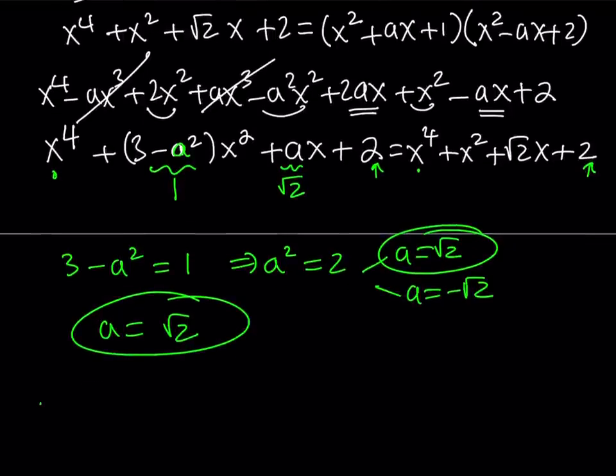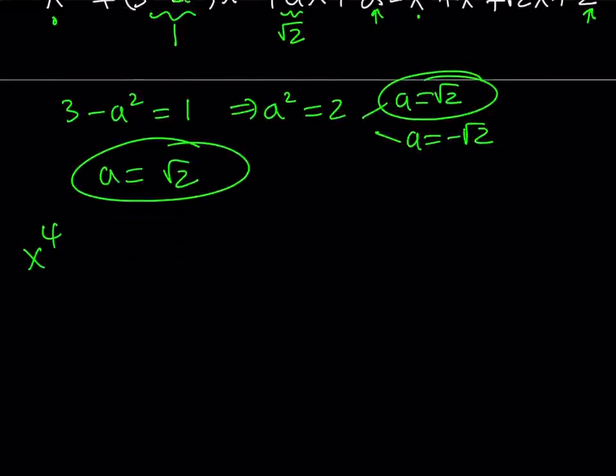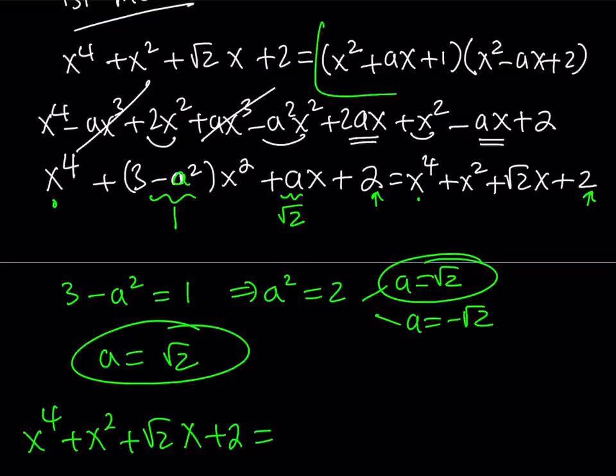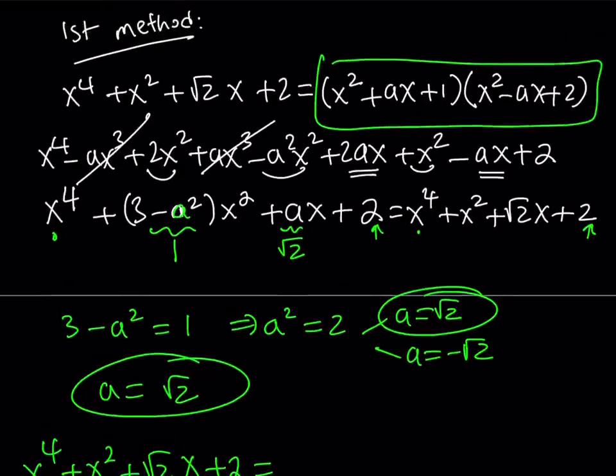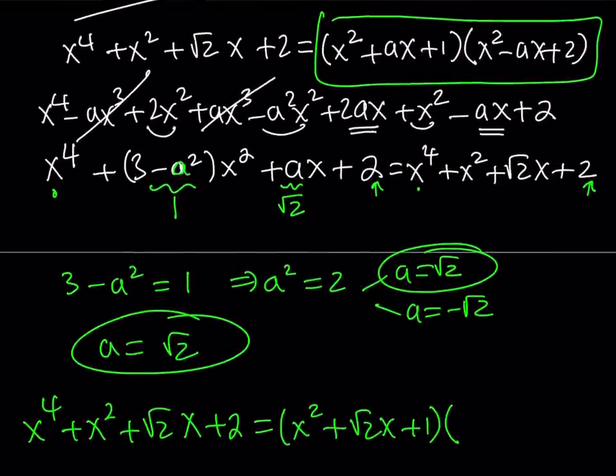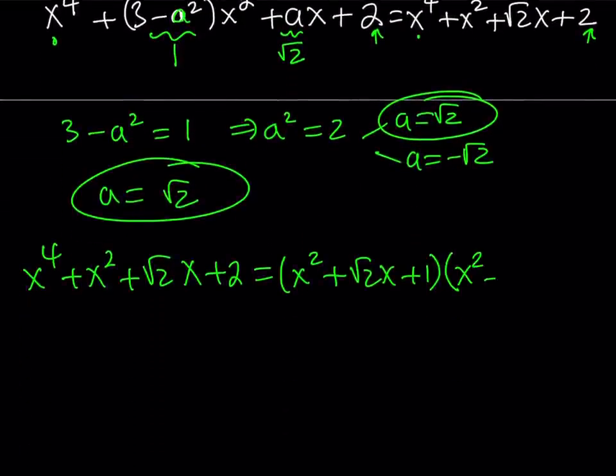And that means that our expression can be factored. So x^4, our original expression was x^4 + x^2 + √2x + 2, and I assume that it's factorable as this. So I can just go ahead and replace the a with √2. That's a positive one, that's a positive √2, so it's going to be (x^2 + √2x + 1)(x^2 - √2x + 2). And this concludes the first method.